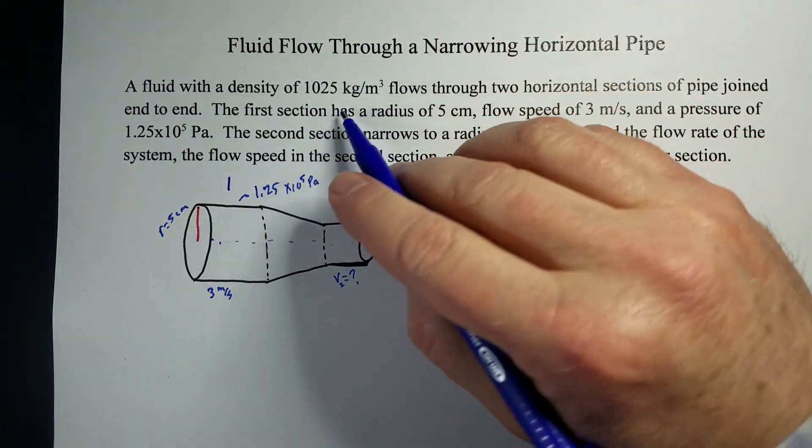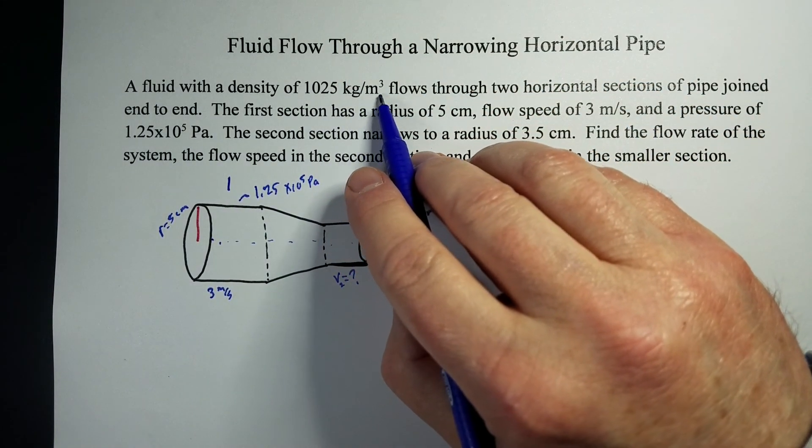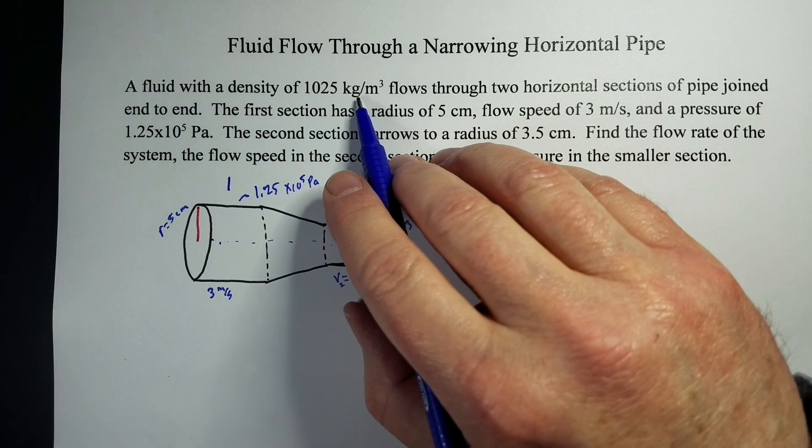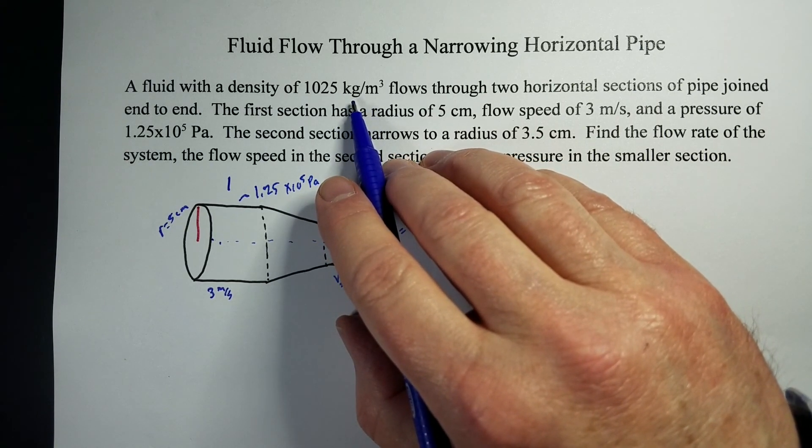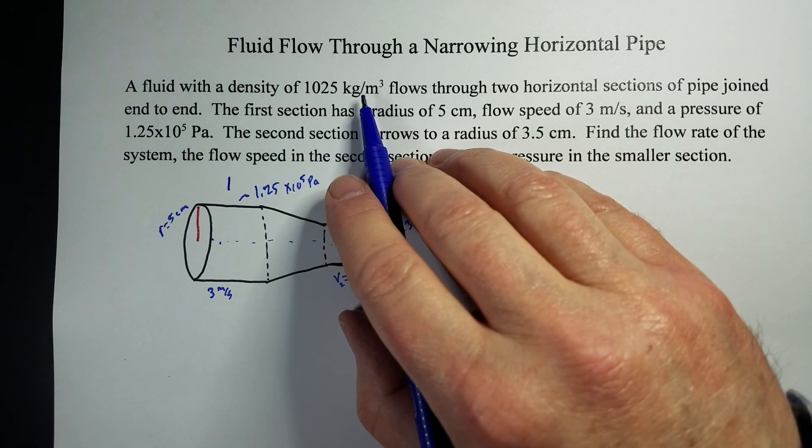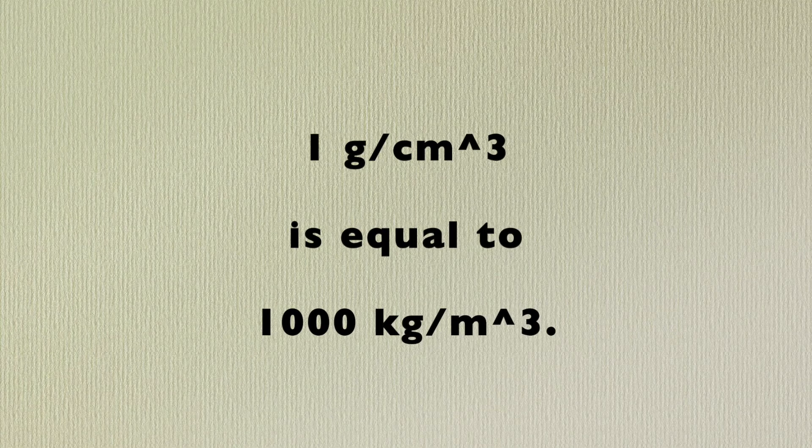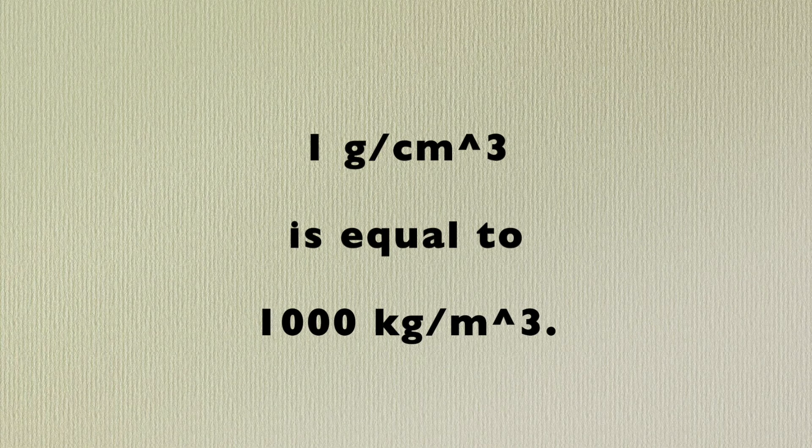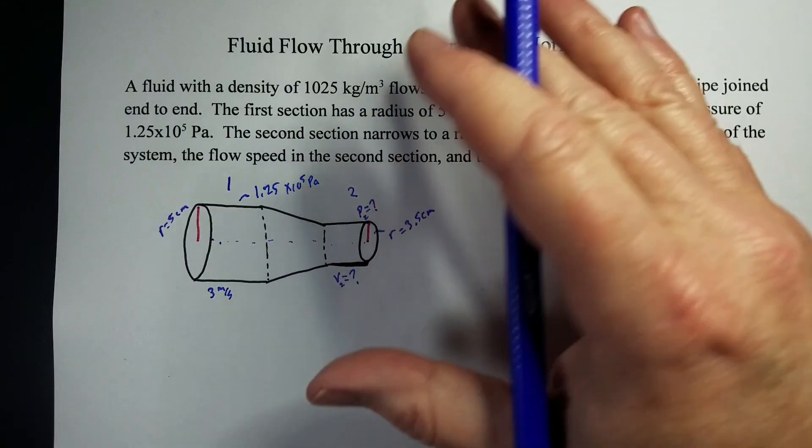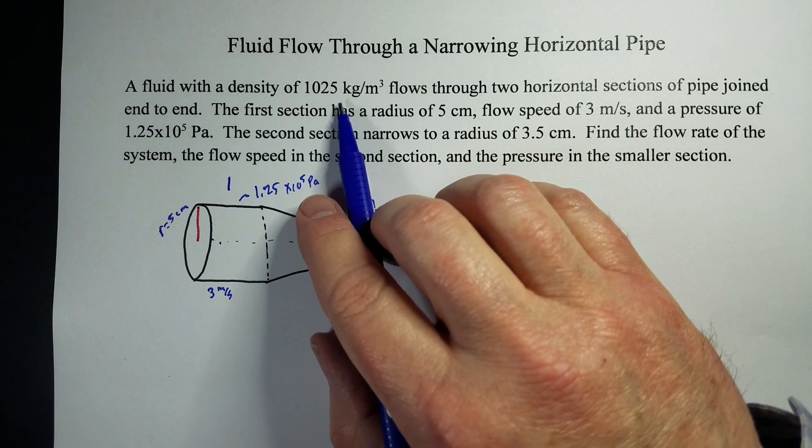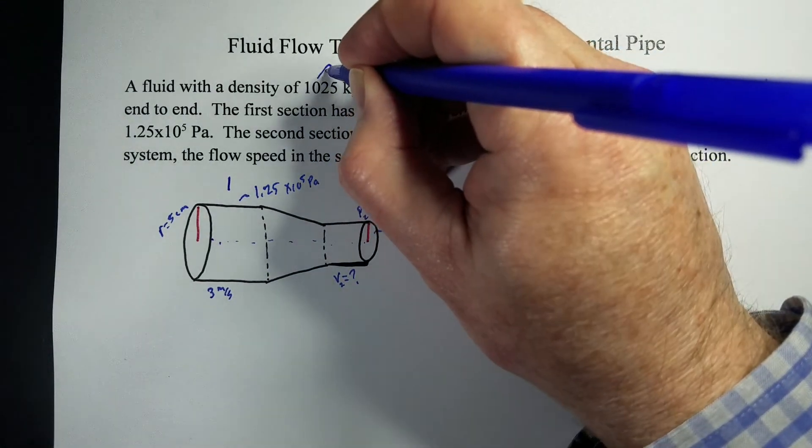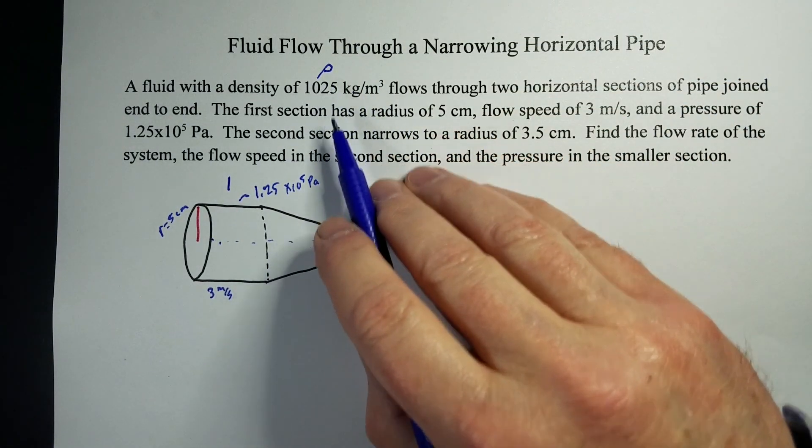So, we've got a density of 1025 kilograms per meters cubed. Now, in physics, we like to use kilograms meters cubed instead of what they use in chemistry, which is grams per cubic centimeter. Because we like things big, and so our numbers look large, but this is probably just salt water at that density.